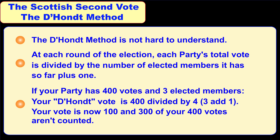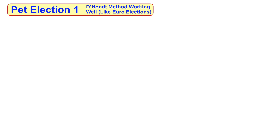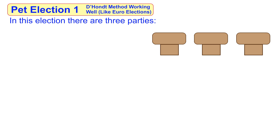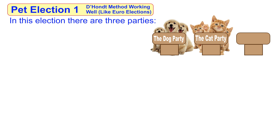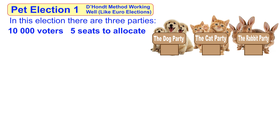Let's run 3 pet elections to see how it works. The first election is one like the European elections with no constituency seats. In this election, the D'Hondt method works really quite well. There are three parties: the dog party, the cat party, and the rabbit party. We've got 10,000 voters and 5 seats to allocate, with no constituency seats.